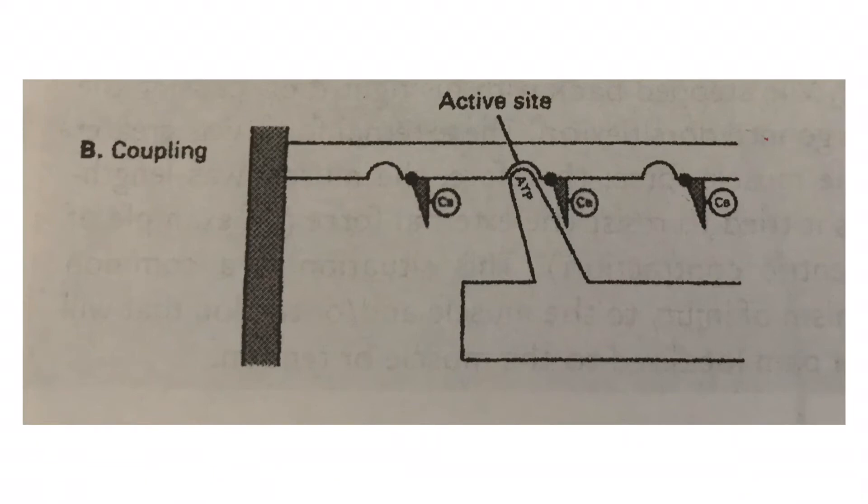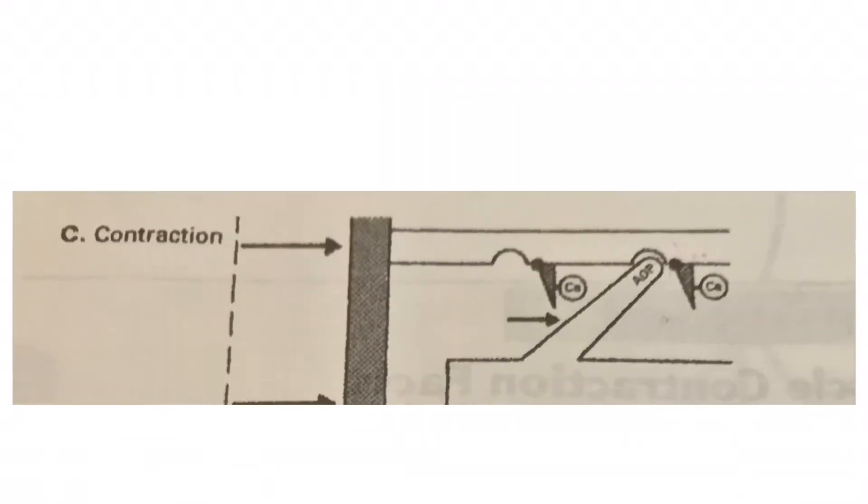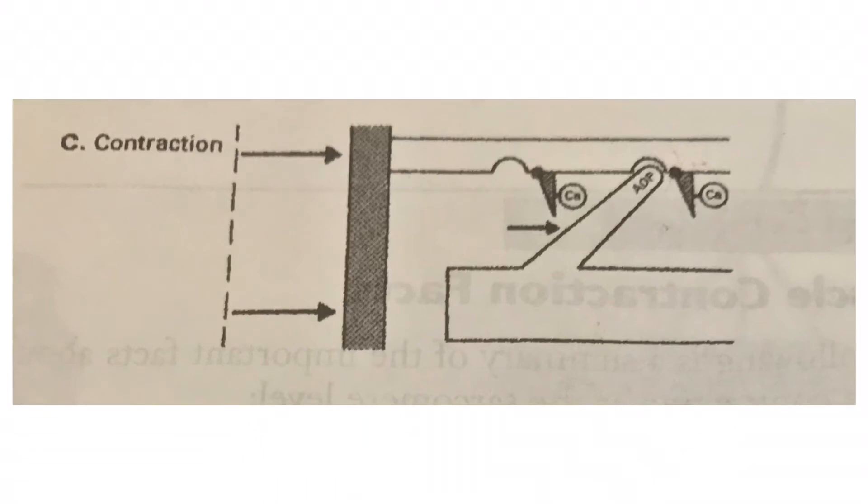Next stage is contraction. As you can observe, the ATP has become ADP. Because such reaction produces flexion of the cross-bridge, allowing the actin myofilament to be pulled short distance past the myosin filament and the Z-discs are now moved closer together.